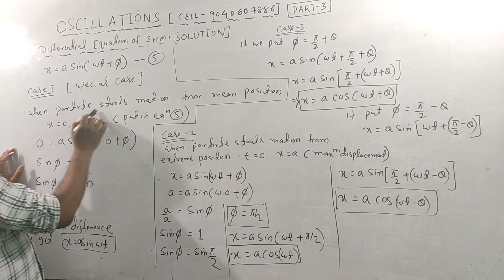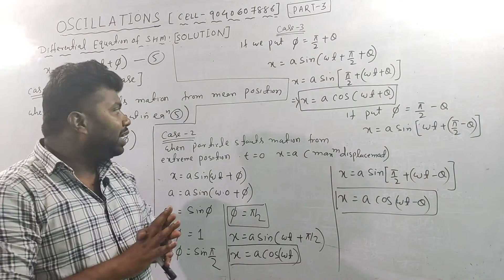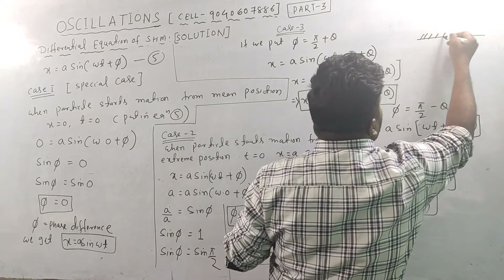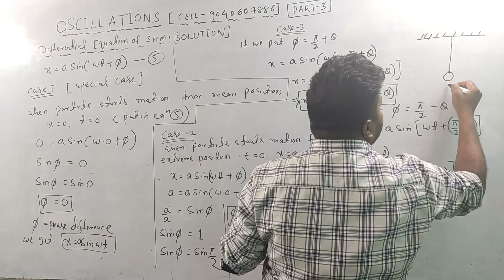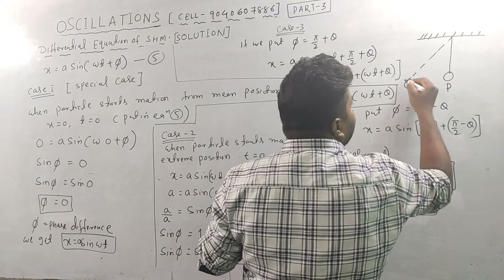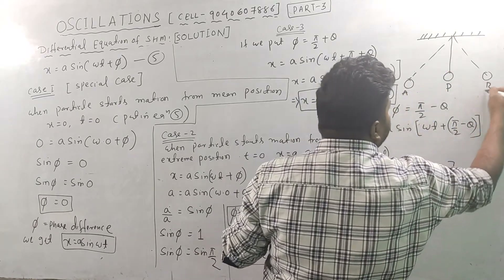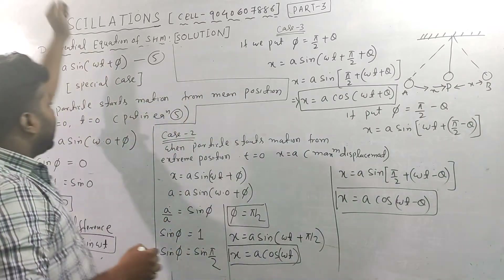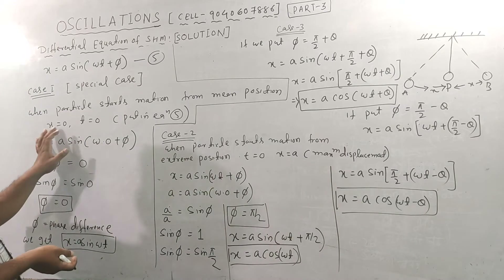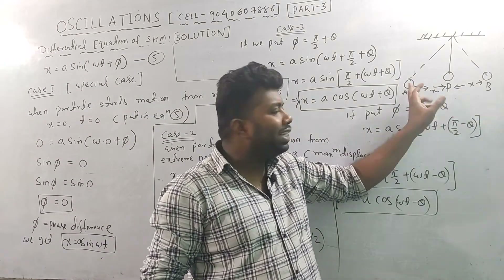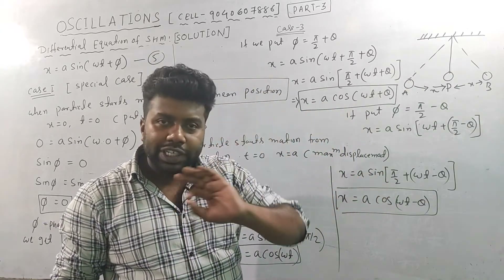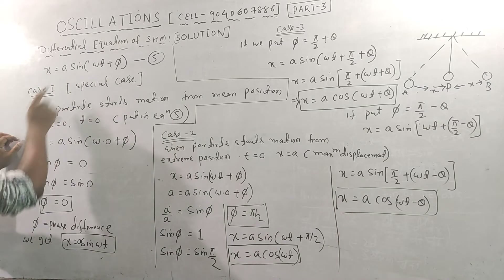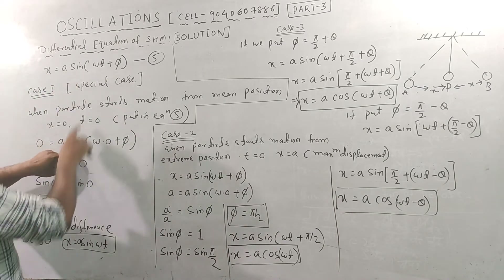First case: particle starts motion from the mean position. Looking at the diagram, we have a pendulum with mean position P. The particle starts at mean position, so x = 0 at t = 0. The distance is zero and the oscillation is starting. So we substitute x = 0 and t = 0 into x = A sin(ωt + φ).